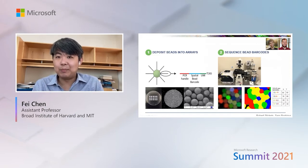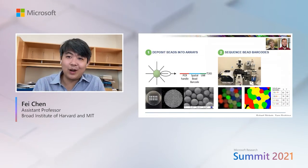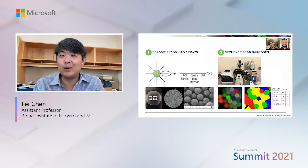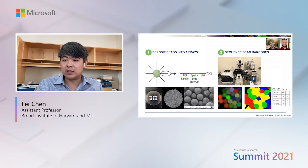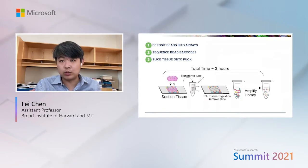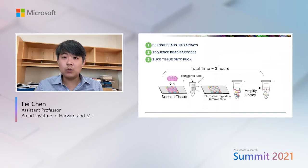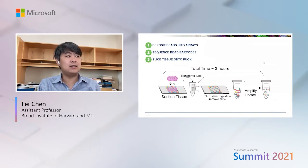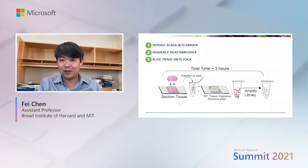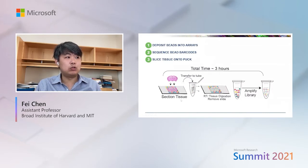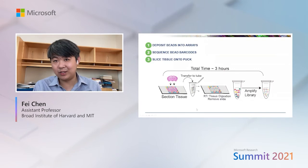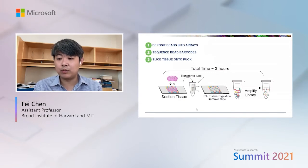Each bead acts like a pixel in a camera — instead of taking pictures of tissue, it captures parts of the transcriptome, and you reconstruct images of the transcriptome from these beads. When we perform the experiment, we take these pre-produced arrays, section a thin 10-micron slice of tissue onto the beads using a cryostat, and the RNA from that tissue transfers onto the beads. You then apply standard molecular biology approaches to amplify the RNA and generate a sequencing library, very similar to single-cell sequencing.